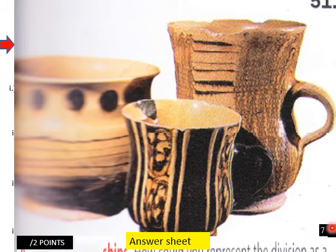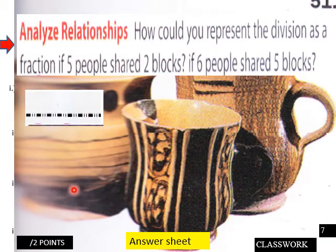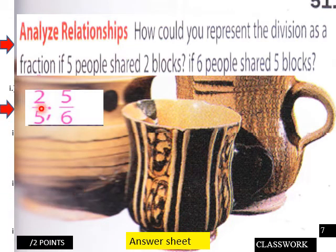Classwork page seven. Analyze relationships. How could you represent the division as a fraction if five people shared two blocks? If six people shared five blocks? So we would be two over five for this question here. Two blocks will be divided five ways. And then five blocks divided six ways here.